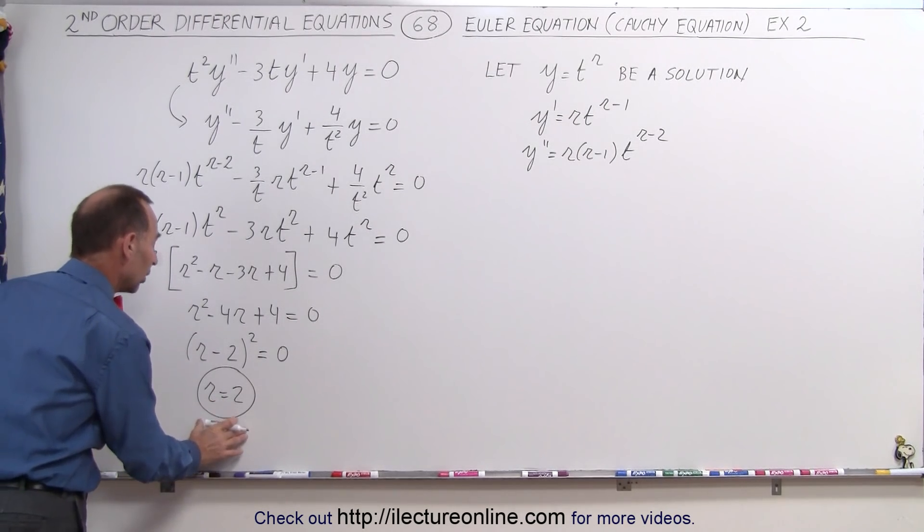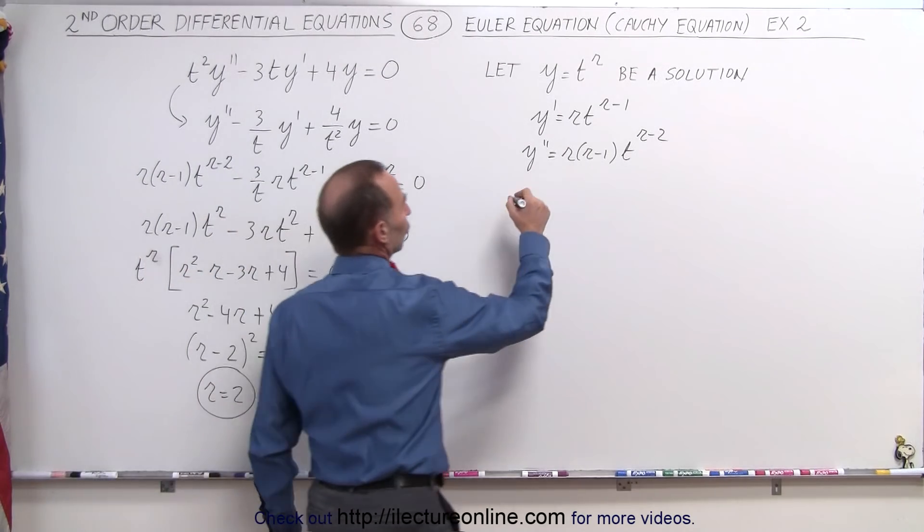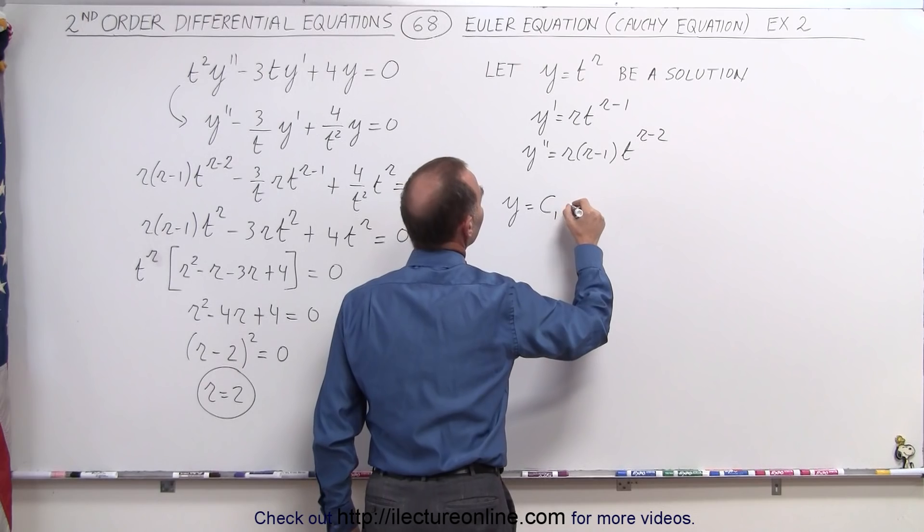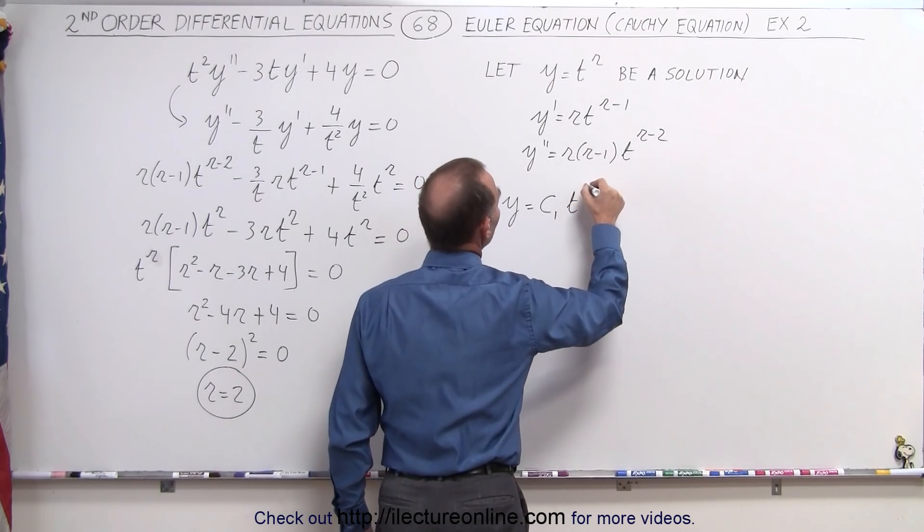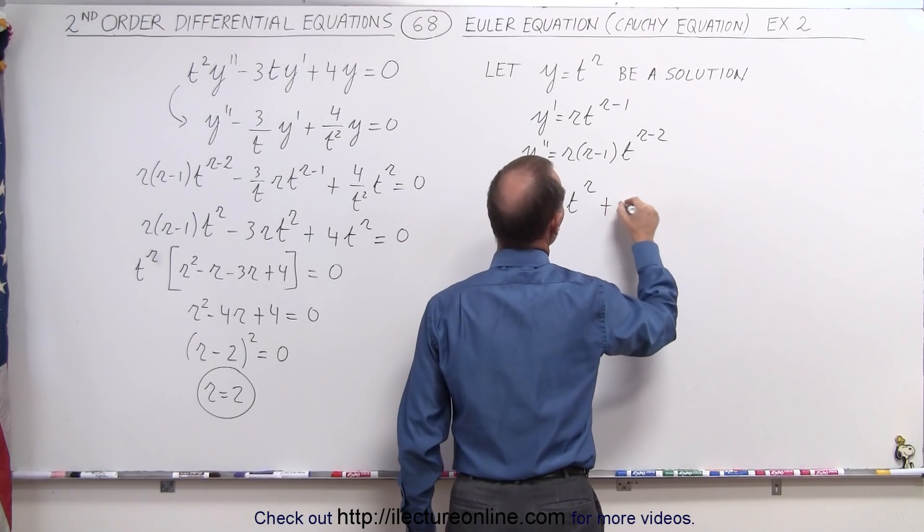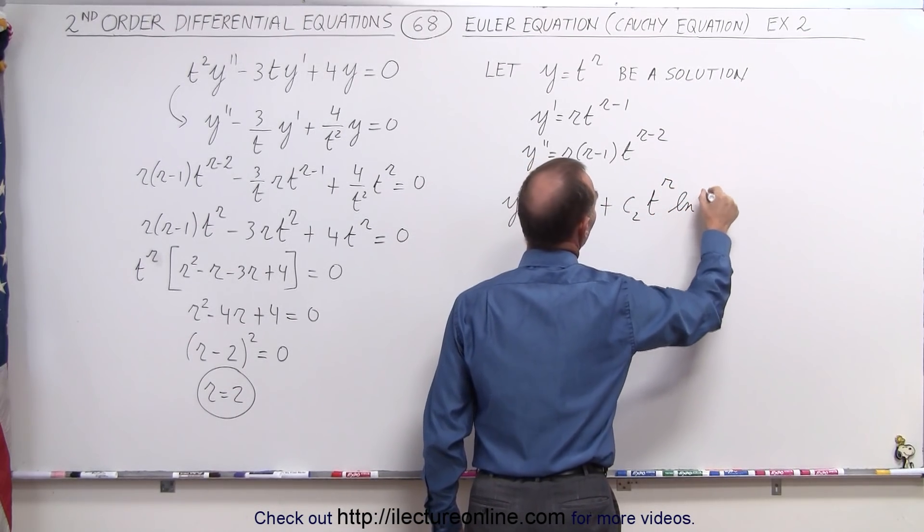So if we have a double root, or repeated root as we call it, then we know that the general solution will be y = c₁t^r + c₂t^r·ln(t), where r is the double root.